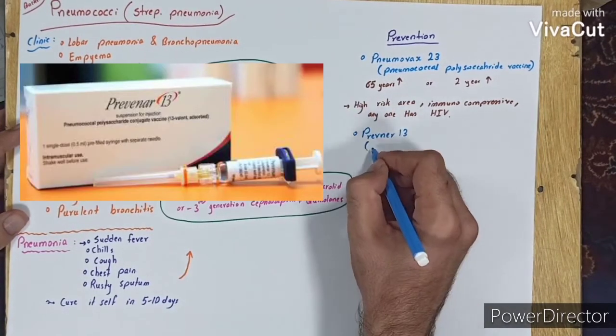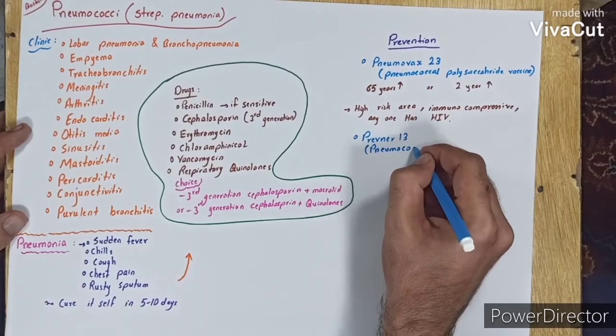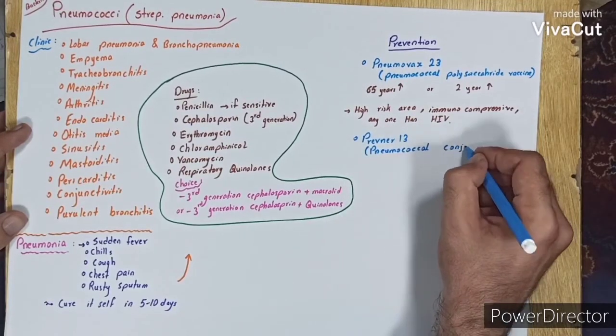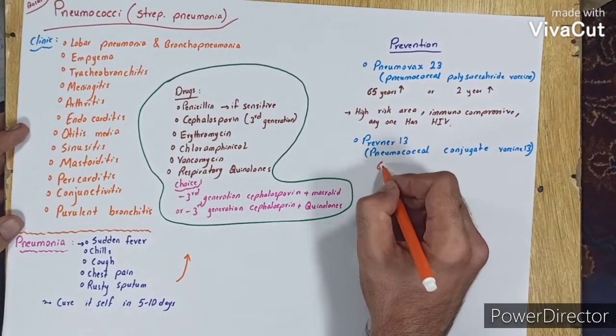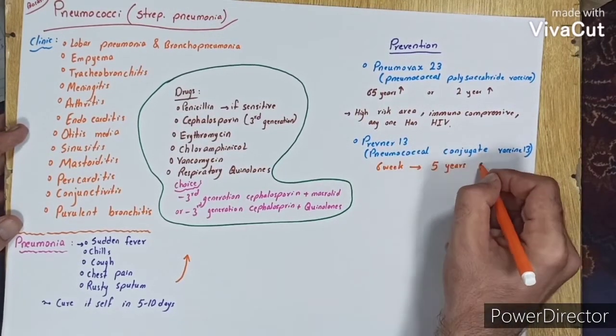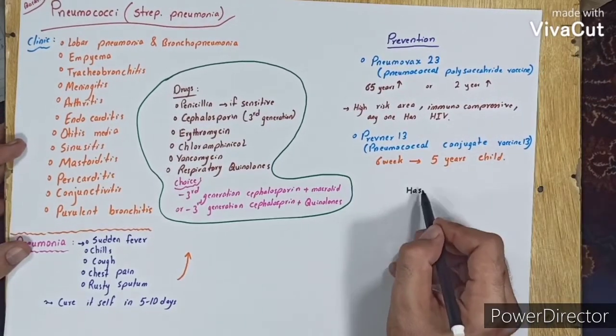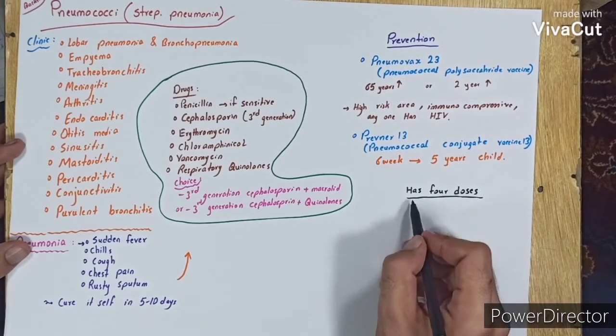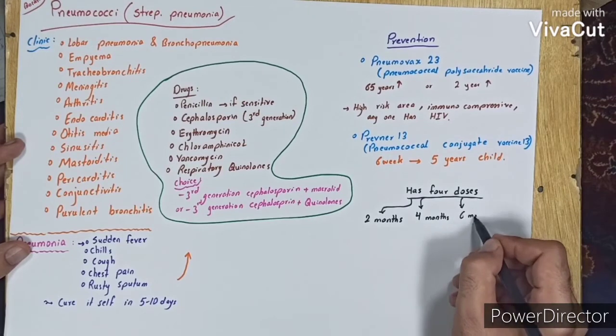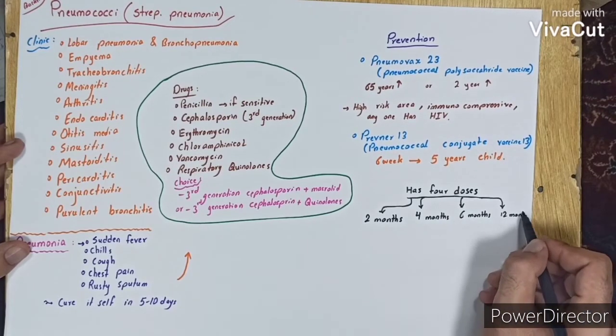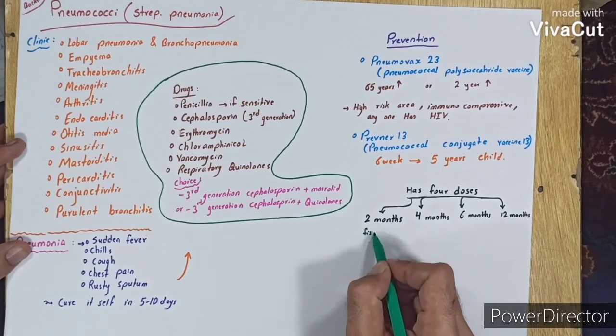Prevnar 13, or pneumococcal conjugate vaccine 13, is for children from six weeks to five years old. This vaccine has four doses: first dose at two months, four months, six months, and twelve months.